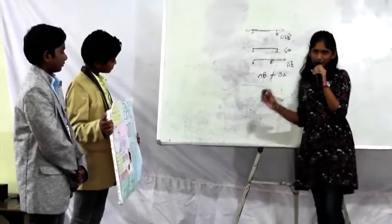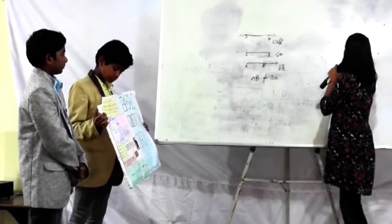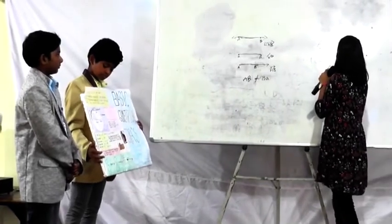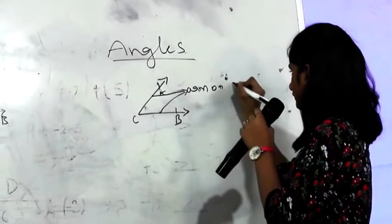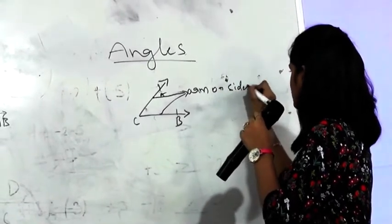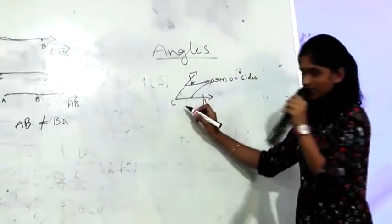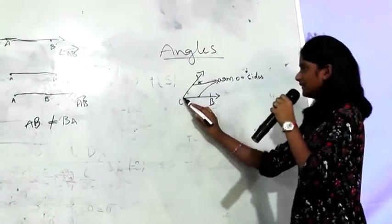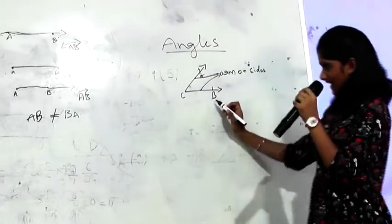Now I am going to talk about angles. These two lines are sides. When these both lines join at one point, that forms an angle.